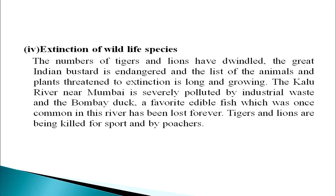Next is extinction of wildlife species. The number of tigers and lions have dwindled. The great Indian bustard is endangered, and the list of animals and plants threatened with extinction is long and growing. The Kalu River near Mumbai is severely polluted by industrial waste, and the Bombay duck, a favorite edible fish once common in this river, has been lost forever. Tigers and lions are being killed by poachers. We now have evidence of environmental backlash not only at the global level but also at regional and local levels.